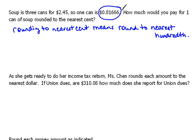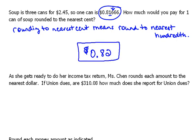So if we're going to take this number, which is the price of one can of soup, and round it to the nearest hundredth — our hundredth position is right past the decimal: tenths, then hundredths. We look one place to the right, and this says we need to round that number up. So that would be $0.82.